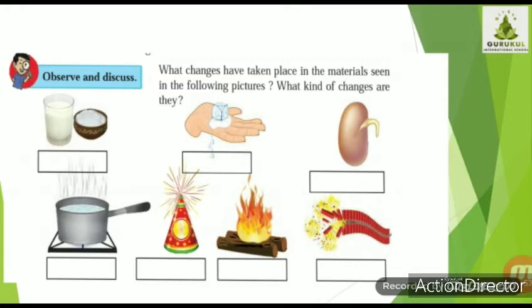Word-to-word meaning: physical change means when there is a change only in the state of a substance — maybe in its size or shape — then it is called a physical change. Chemical change means if one form of a substance is transformed and a totally new substance has been formed, then we can say it is a chemical change.